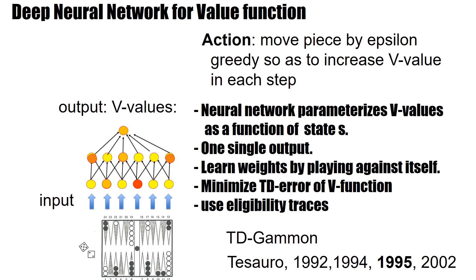We learn this using an error function that represents the TD error of the V-values, and importantly, we use eligibility traces. Note that this is a discrete game; however, the inputs are nicely represented such that generalization across different similar positions is possible. With this, a trained neural network already achieved in 1995 a level of performance where it could beat masters in the field.